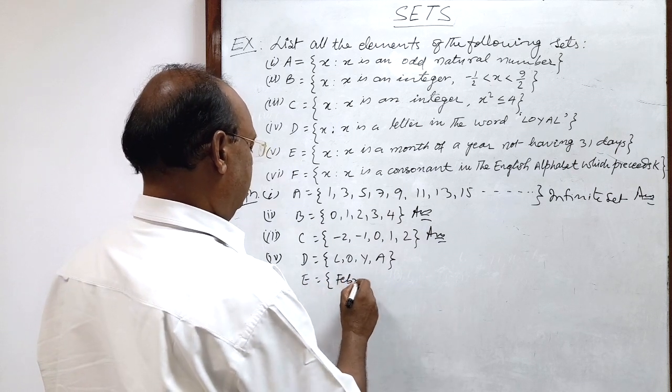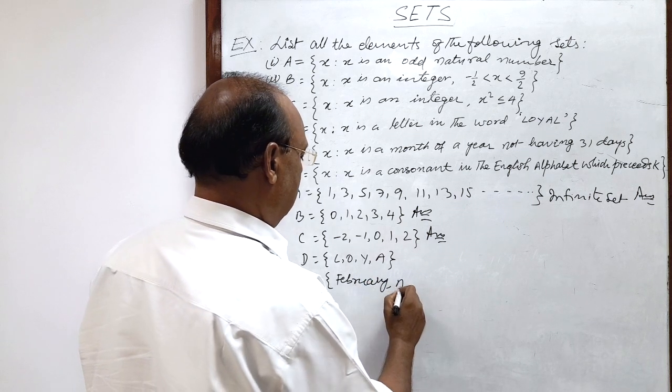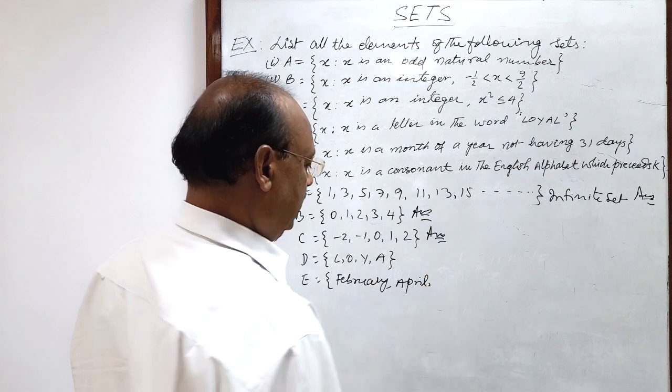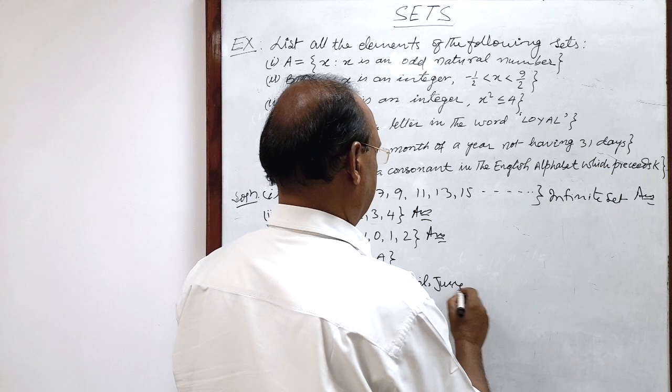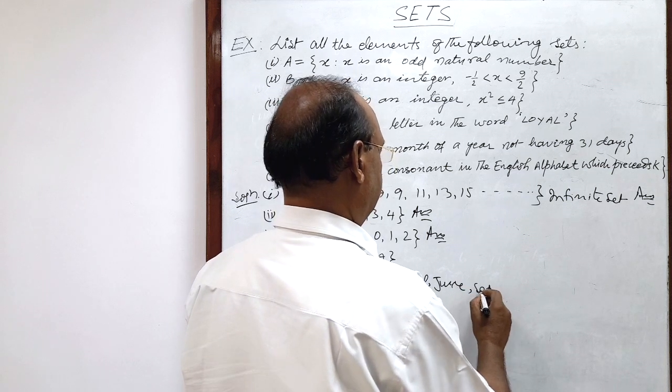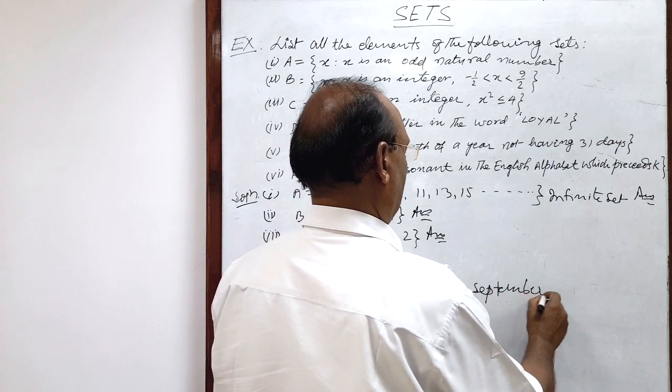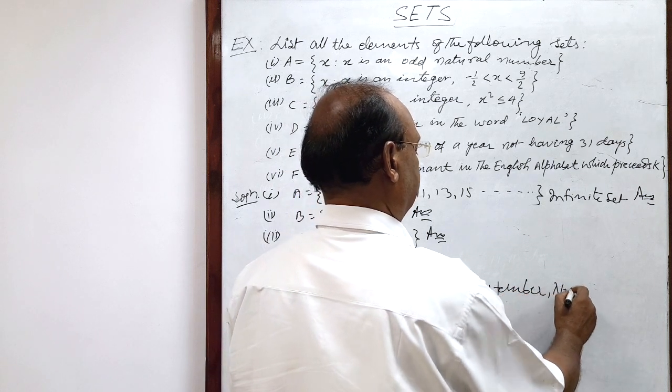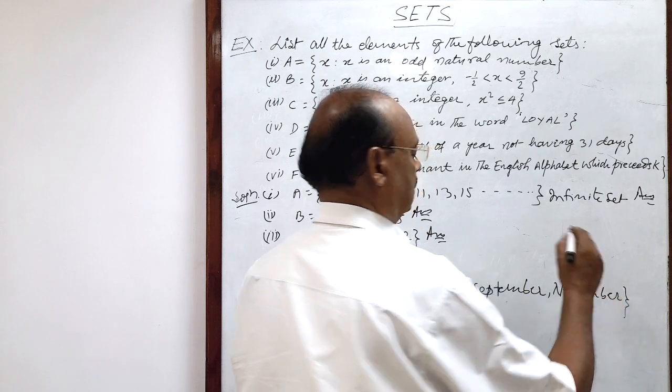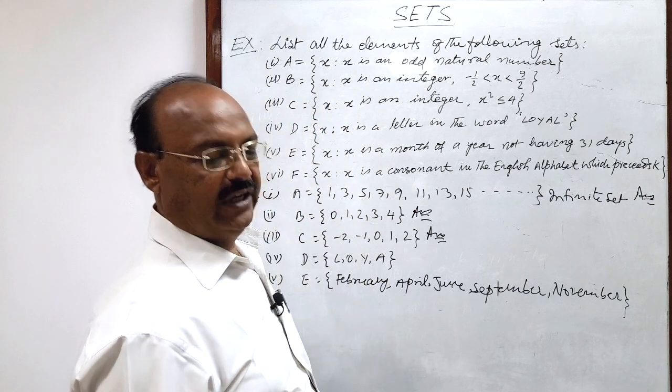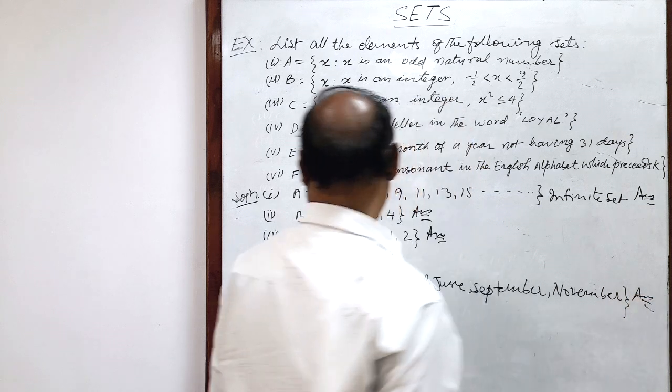These months are February, next April, next June, and September, and November. You know these months are not having 31 days, less than 31 days. So this is the answer for the fifth part of the question.